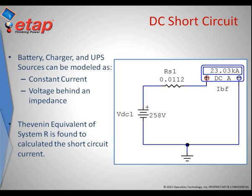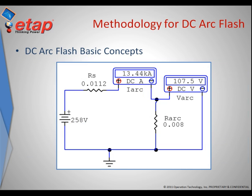Now that we have the amount of DC short circuit current which can be released for a bolted fault in the DC circuit, based on the methodology selected, we can determine the equivalent arc resistance and arc voltage drop across the arc in the event of an arc flash. The arc is modeled as an additional resistance placed in series with the system's resistance, and this new circuit will help determine the magnitude of an arc fault.